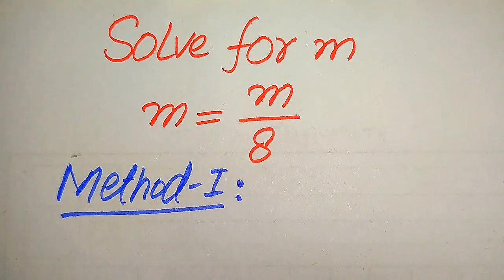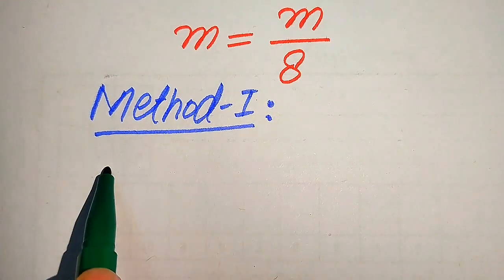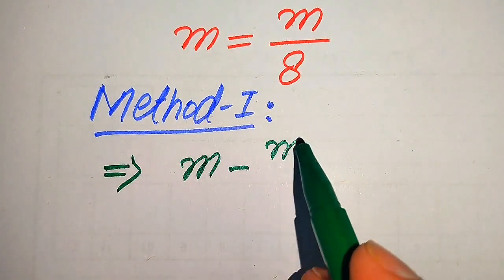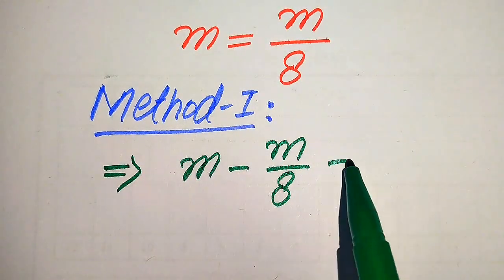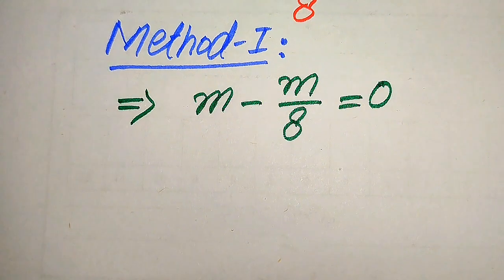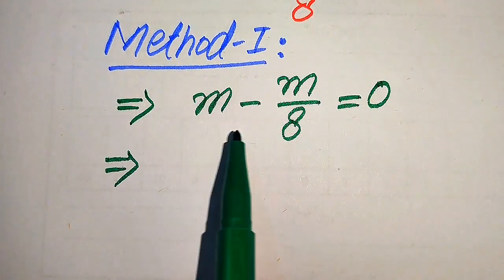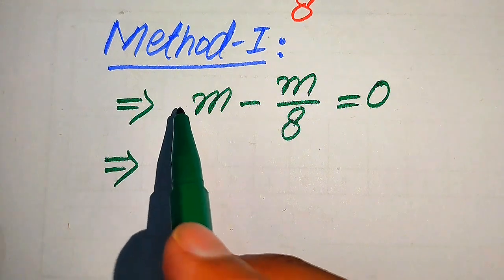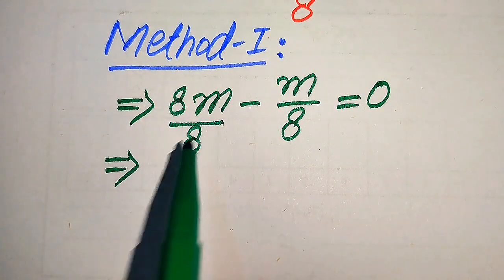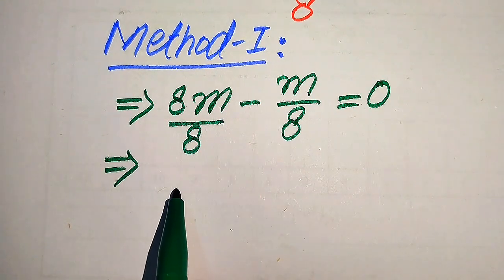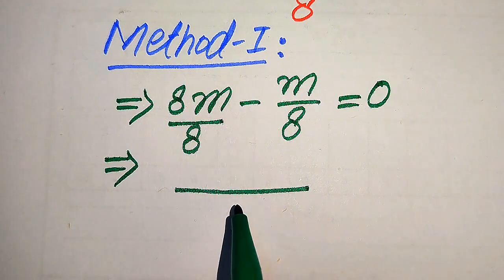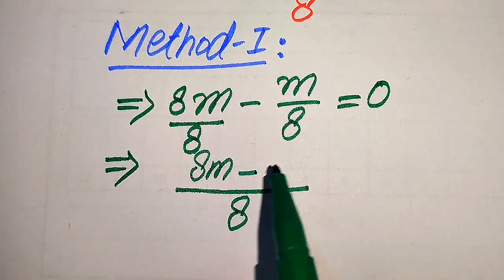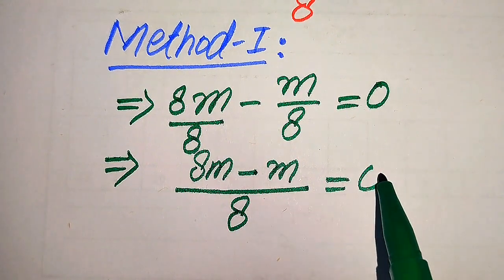In the first method we use the LCM technique to find the roots of m. First we move m over 8 to the left hand side, written as m minus m divided by 8, which becomes equals to 0. To take the LCM we need the denominators of both terms to be the same. The denominator of the second term is 8 and the first is 1, so we multiply and divide by 8. Now both denominators are the same, so we take the LCM as 8, giving us 8m minus m equals 0.